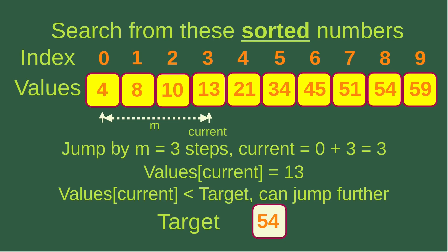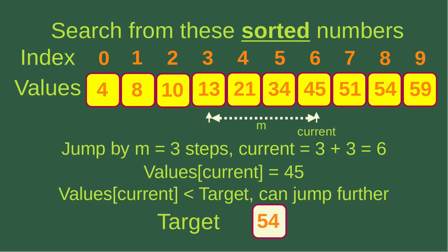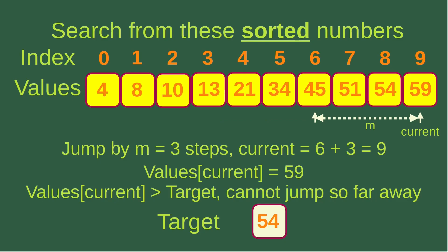After the jump of 3 steps, the current index becomes 3. At this index, the value is 13, and 13 is still smaller than 54, which means we haven't reached the target yet. We jump by 3 more steps — the current index becomes 6, and the value at this index is 45. 45 is still smaller than our target 54, so we can jump further. We jump by 3 more steps; the current index becomes 9, and the value is 59. But now the value is larger than our target, which means we cannot jump so far.